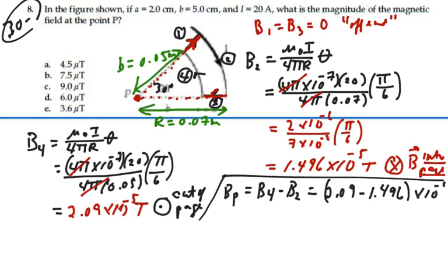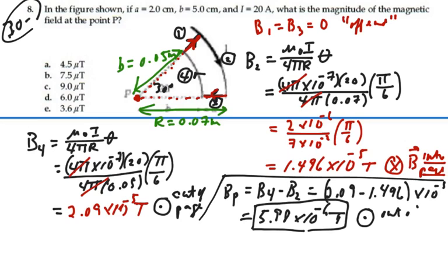So our magnetic field at point P is going to be equal to B₄ minus B₂, which is going to be equal to 2.09 minus 1.496 times 10 to the minus 5. So what is that? That is 5.98 times 10 to the minus 6 tesla.